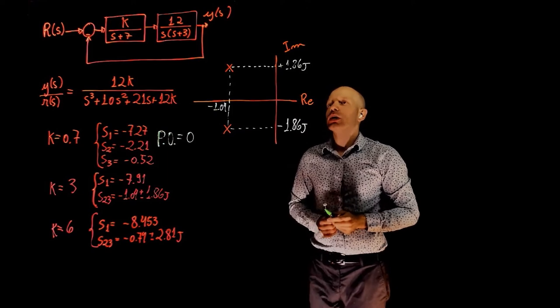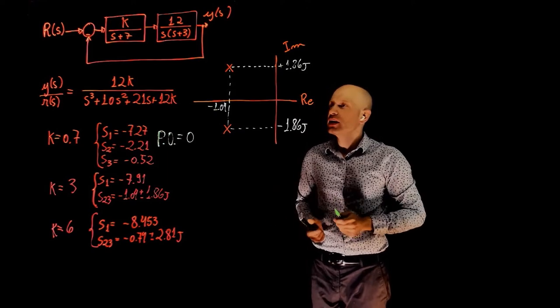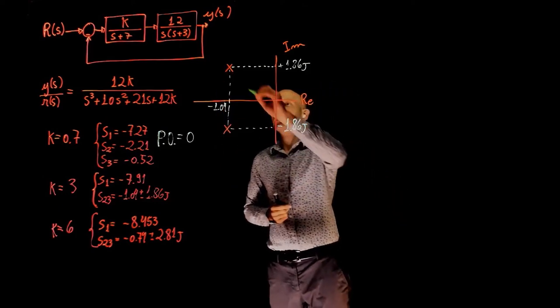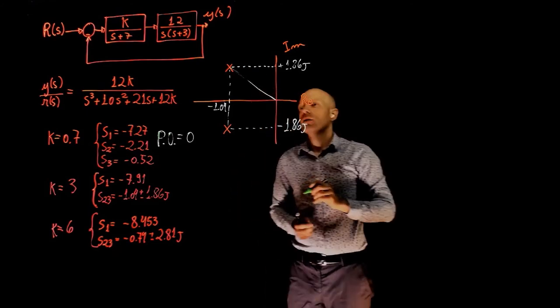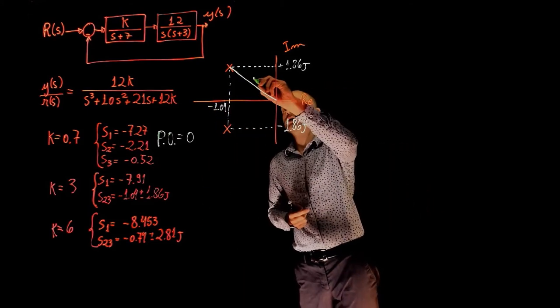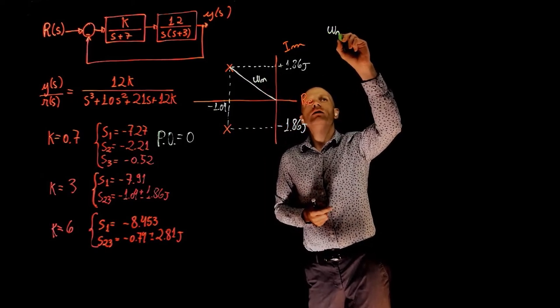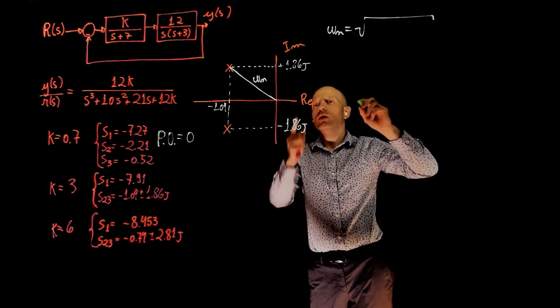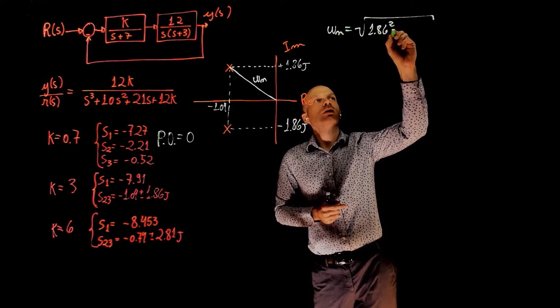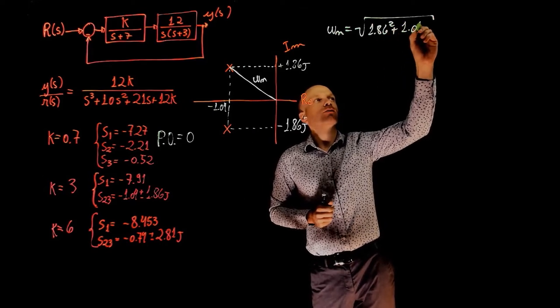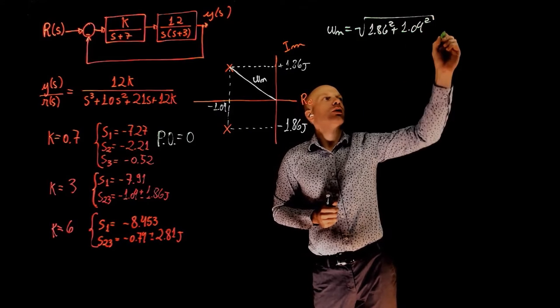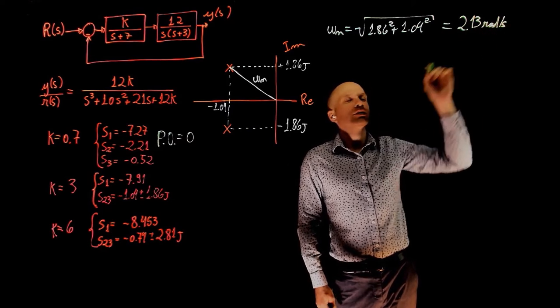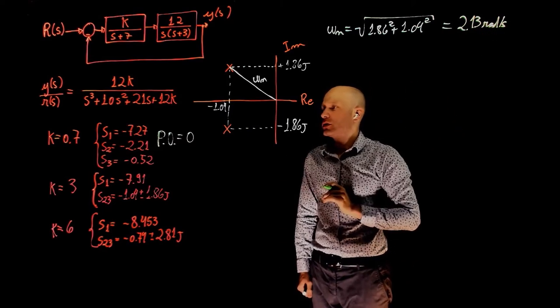Now based on the location of the poles, we can determine the natural frequency, and as we saw in the lecture, the natural frequency is this distance, the distance from the pole to the origin of the imaginary plane. This distance here can be easily calculated. This is ωn and ωn is square root of 1.86 squared plus 1.04 squared. And this gives 2.13 radians per second. This is the natural frequency of the system when K equals 3.